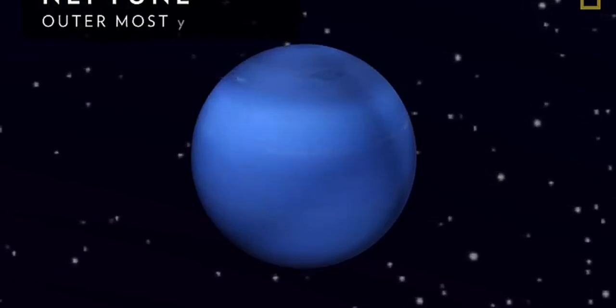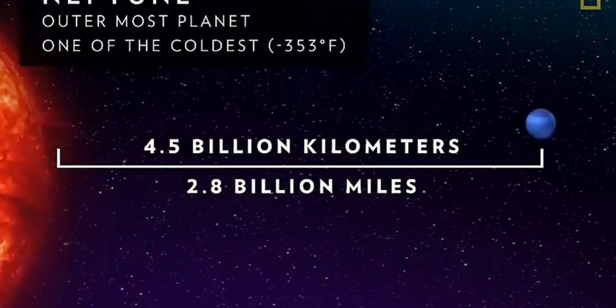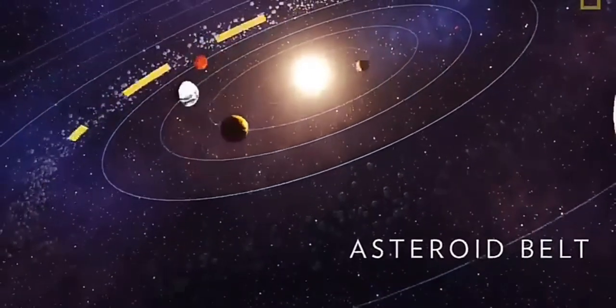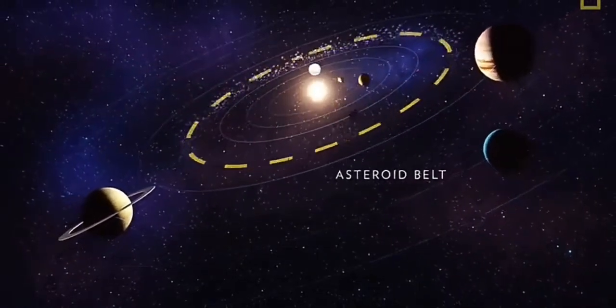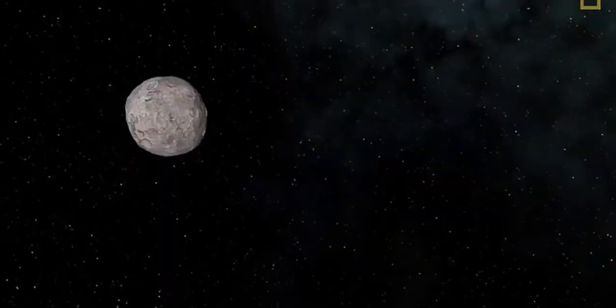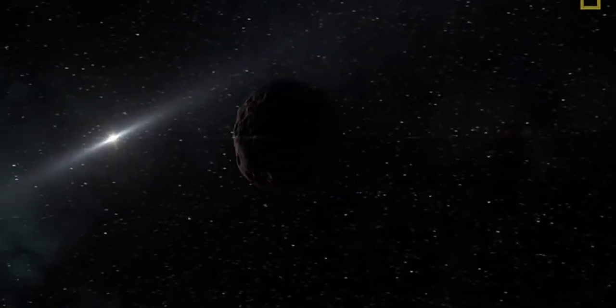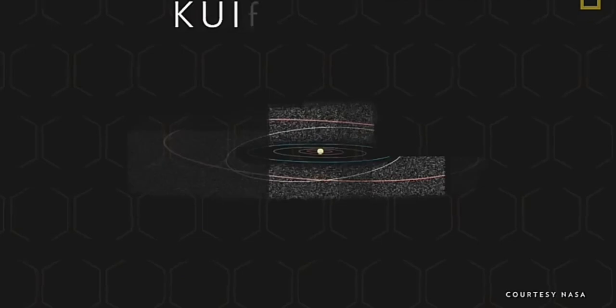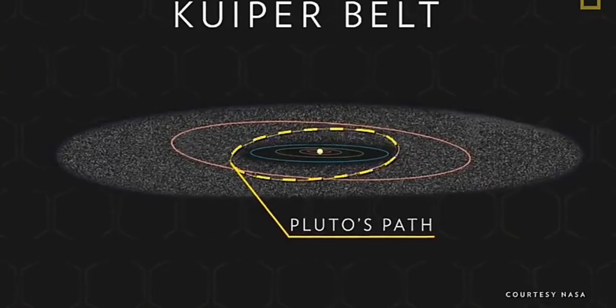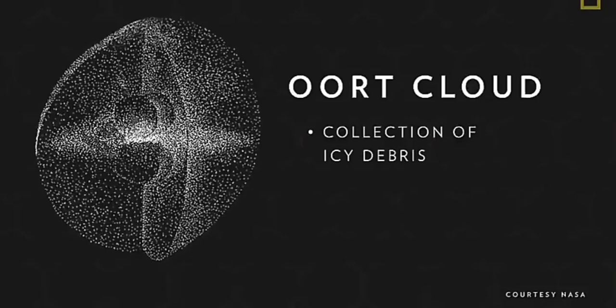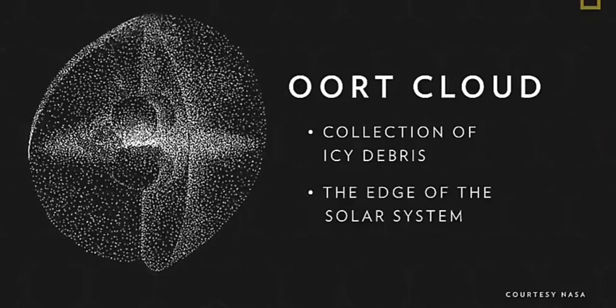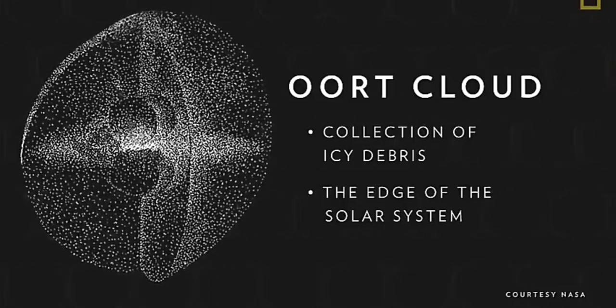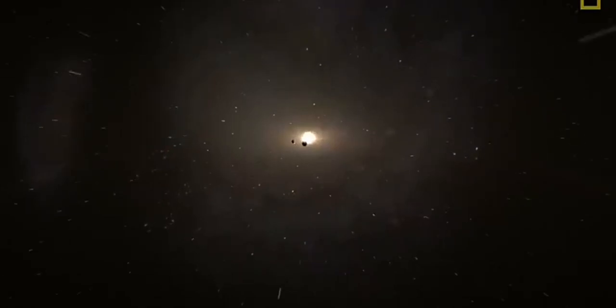Neptune is the outermost planet in the solar system and also one of the coldest. Orbiting between the terrestrial and Jovian planets is the asteroid belt — a flat disk of rocky objects full of remnants from the solar system's formation, ranging from microscopic dust particles to the largest known object, the dwarf planet Ceres. Further out, orbiting the Jovian planets, is the icy Kuiper Belt, home to dwarf planets such as Pluto and the birthplace of many comets. Beyond the Kuiper Belt is the Oort Cloud — a vast spherical collection of icy debris considered the edge of the solar system, where the gravitational and physical influences of the Sun end.